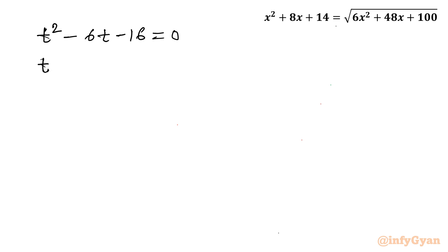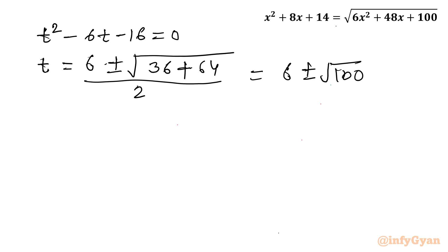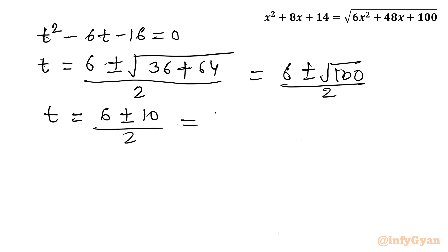Let us apply the Sridharacharya formula. t = (6 ± √(36 + 4×16)) / 2 = (6 ± √100) / 2 = (6 ± 10) / 2. With the plus sign: 16/2 = 8. With the minus sign: −4/2 = −2. So t = 8 and t = −2.